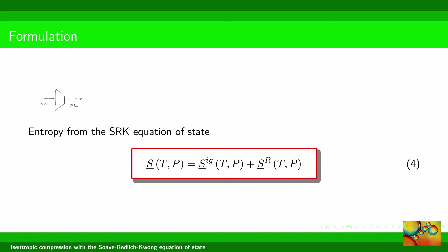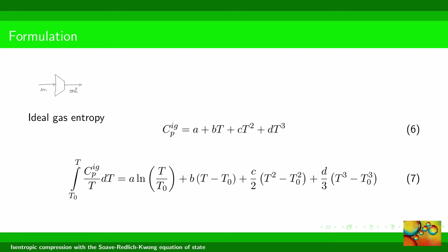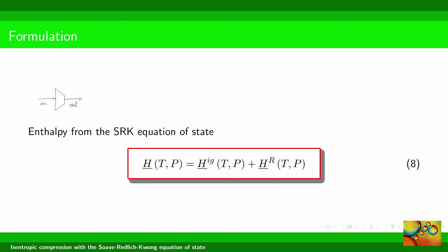The residual property is sometimes called the departure property or the departure function. The ideal gas molar entropy is evaluated using equation five. The ideal gas entropy at the reference pressure and reference temperature, P-nought and T-nought, is set equal to zero. The exact form of the integral of Cp divided by T depends on the functional dependence between Cp and temperature. Here, we adopt a third-degree polynomial in temperature, and the integration leads to equation seven. The entropy calculation follows a similar pattern, adding ideal gas and residual contributions.